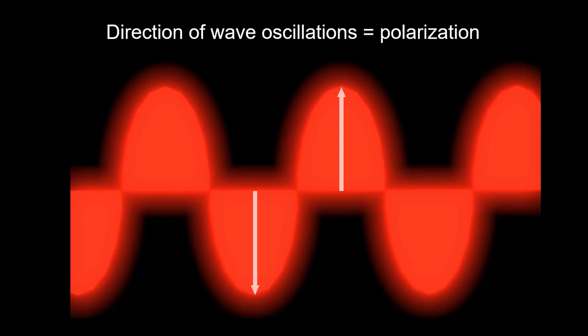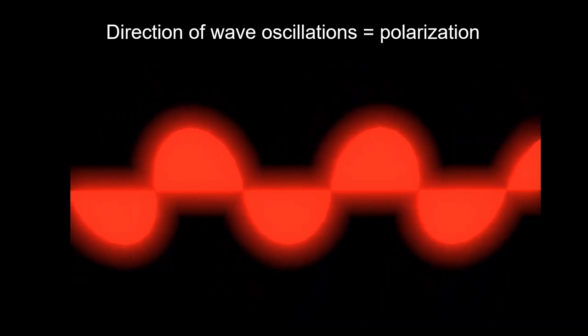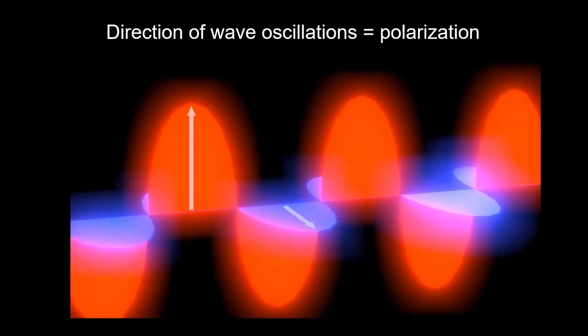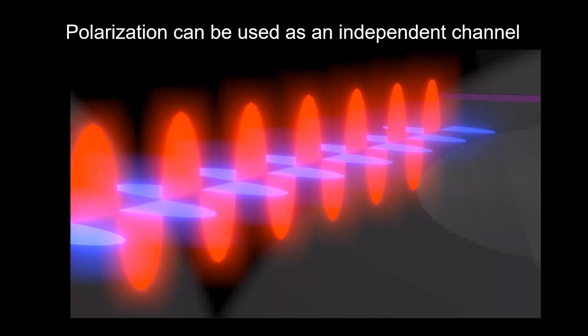Polarization refers to the direction of electromagnetic wave oscillations, and it can be rotated into different directions. Just like light with multiple colors, a single ray of light can contain many polarizations, and each polarization can function as an independent information channel.